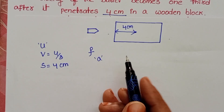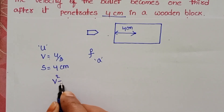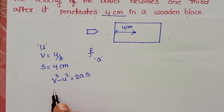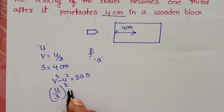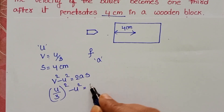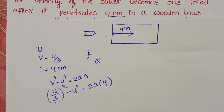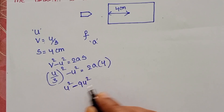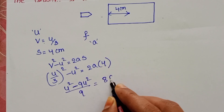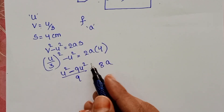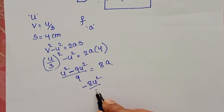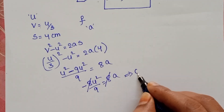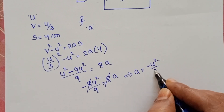First, find out the acceleration of the bullet. Using V² - U² = 2A × 4, we get U²/9 - 9U²/9 = 8A. Simplifying, the acceleration equals -U²/9.